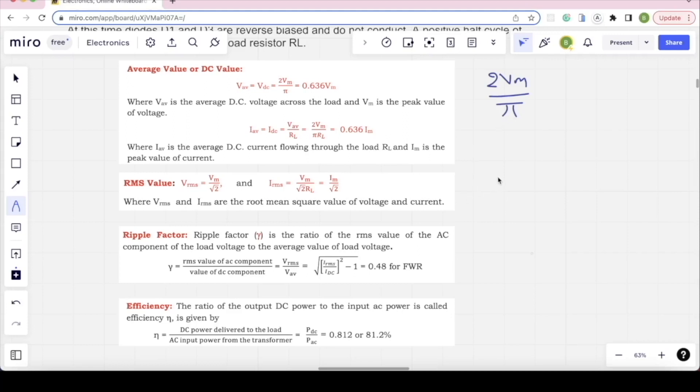V RMS value is VM by root 2. Ripple factor, V RMS by V average, 0.48. Half wave value is 1.21, but this will be 0.48. Efficiency is 81.2%.